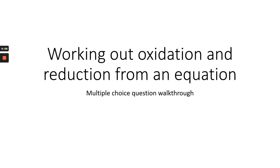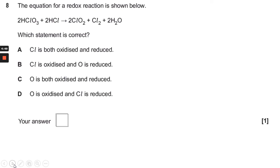Hi and welcome to this clip looking at how to work out oxidation and reduction of elements from a given equation. It's done in the multiple choice format. The equation contains a number of chlorine-containing species, so it's a little bit more complicated than the normal type of redox equation you might see in a textbook.